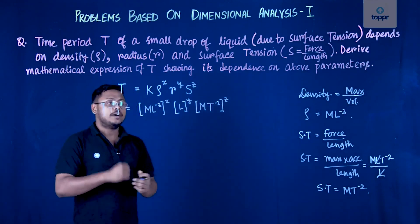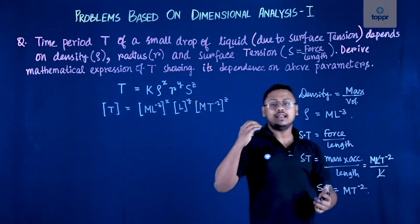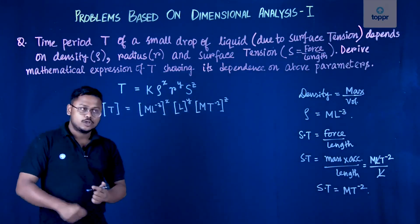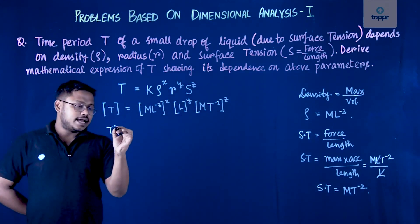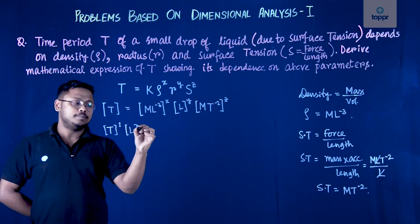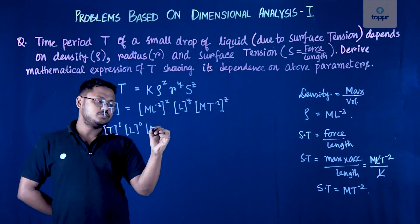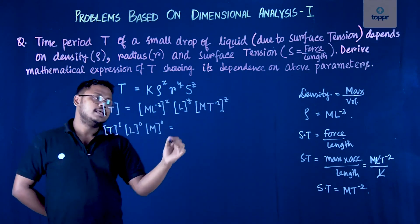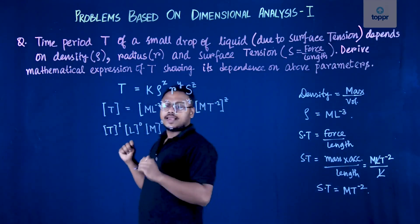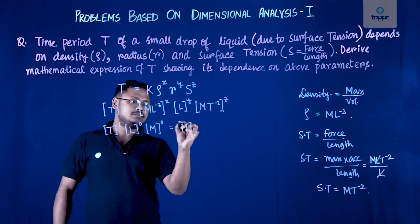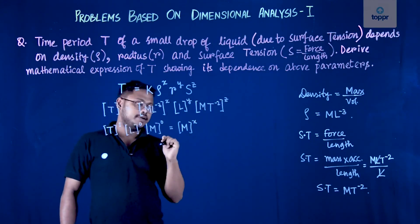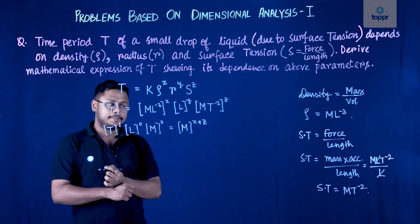Now we need to find the values of X, Y, and Z so we can write how the time period depends on density, radius, and surface tension. On the left-hand side we have T to the power 1, L to the power 0, and M to the power 0. On the right-hand side, let's segregate M, L, and T.